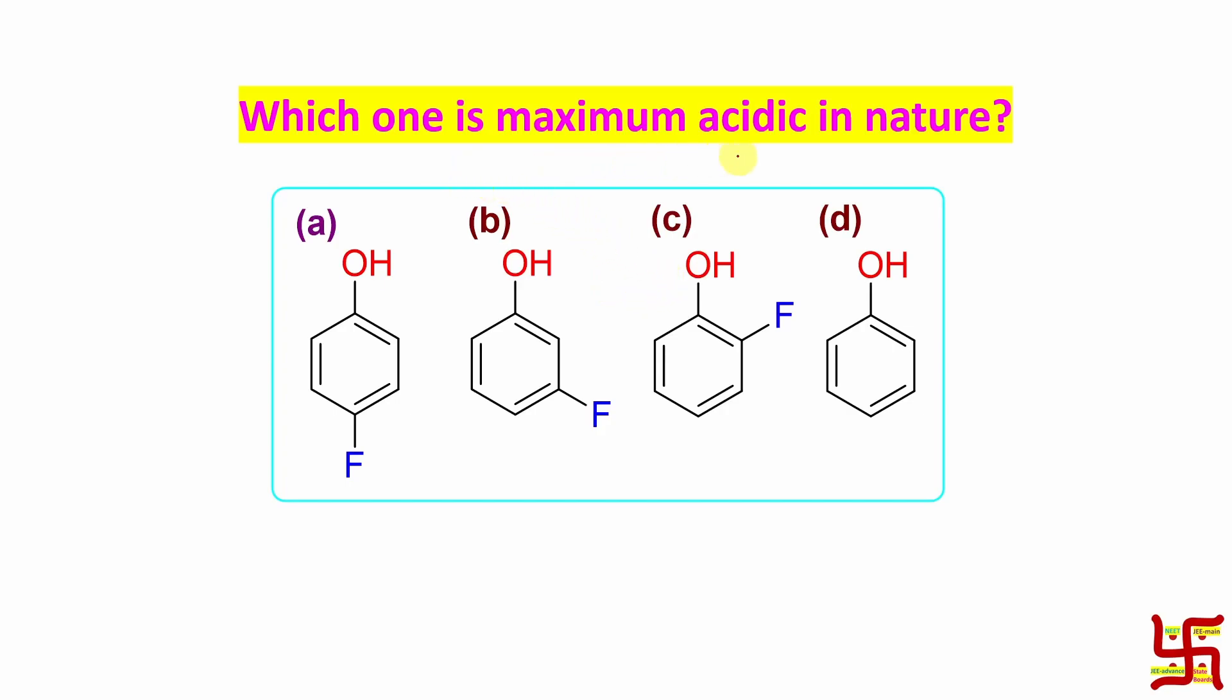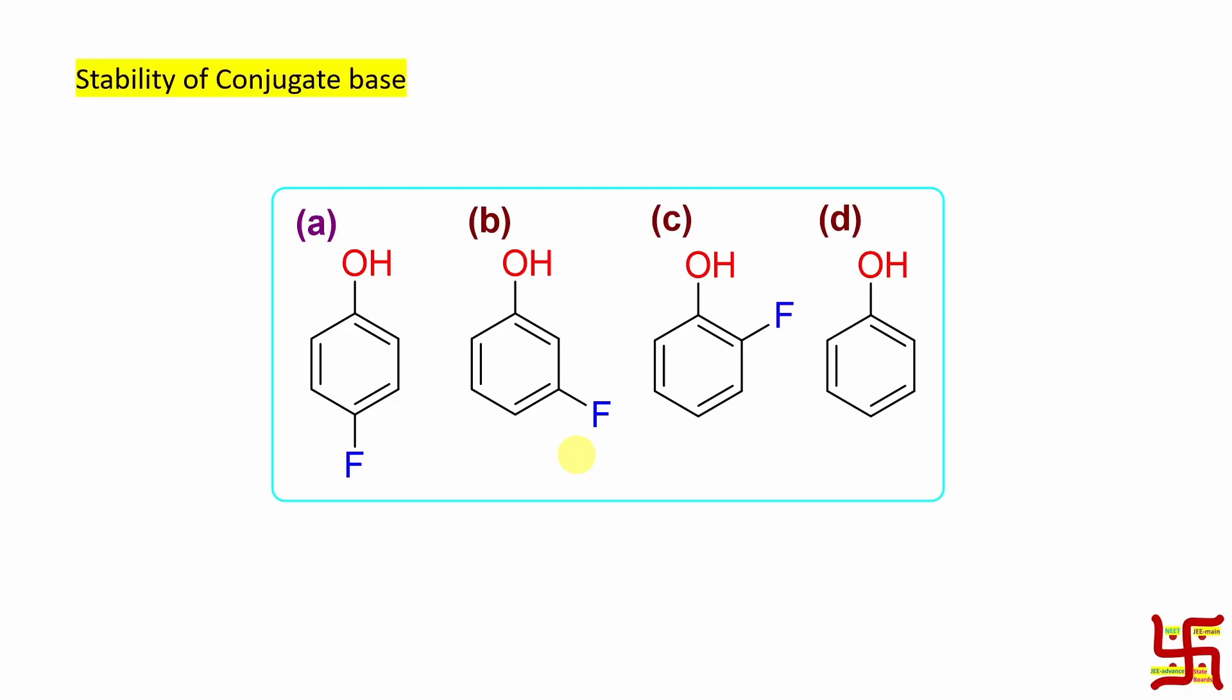Question is which one is maximum acidic in nature? So 4 options given, 4 are actually phenolic derivatives. And here acidic means who can release proton maximum efficiently. Proton releasing efficiency is actually dependent on the stability of the anionic part which is called as conjugate base. And remember the thumb rule, more the stability of conjugate base, higher will be the acidity.